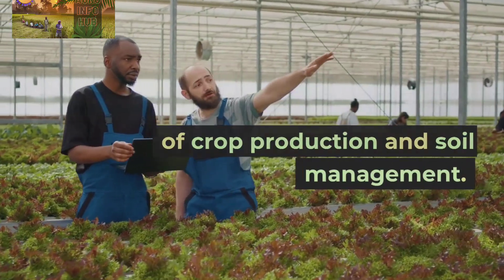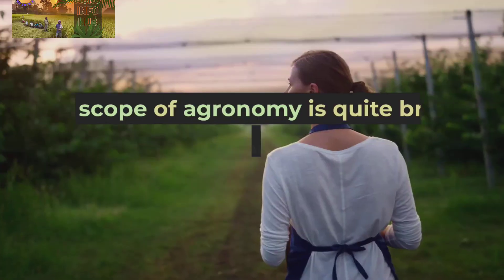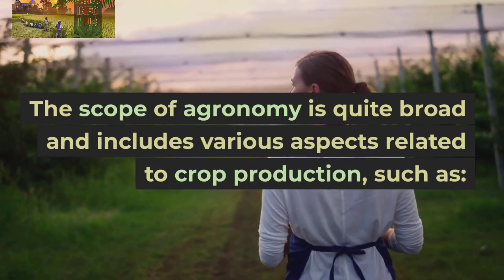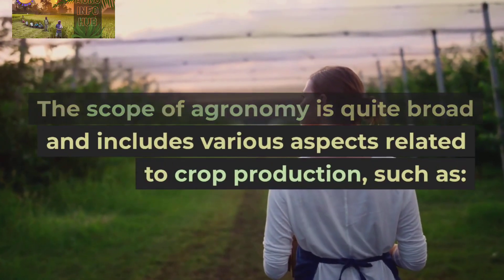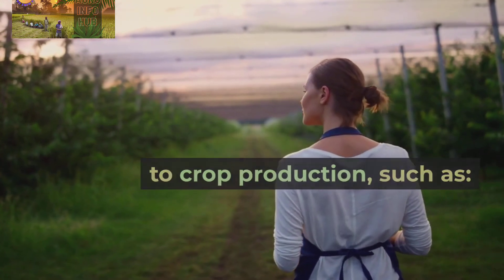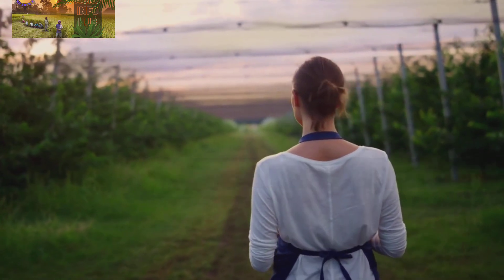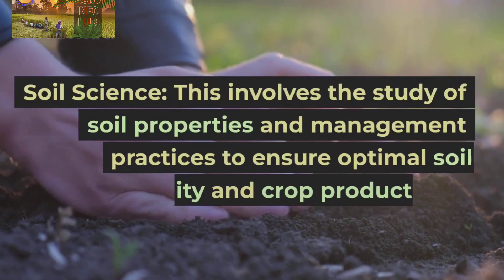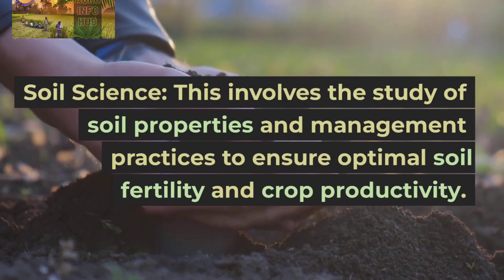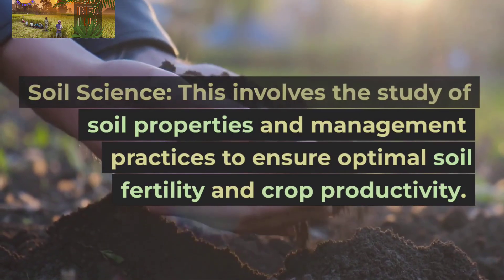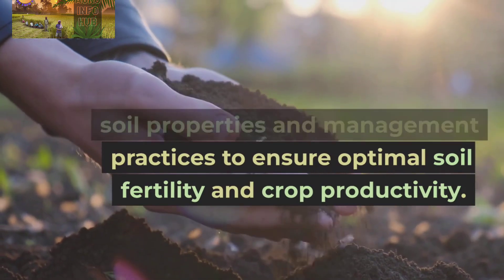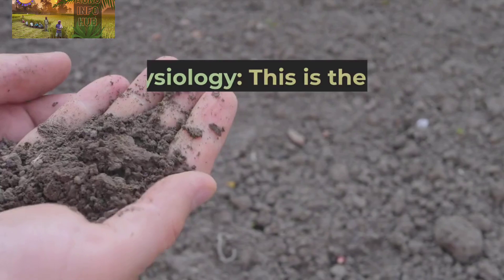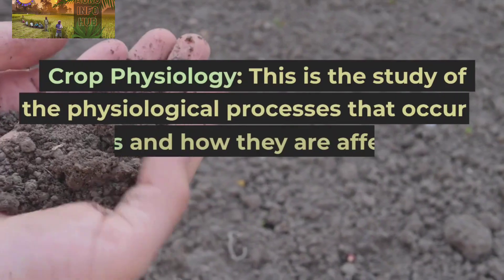The scope of agronomy is the science and practice of crop production and soil management. It is quite broad and includes various aspects related to crop production. Soil science involves the study of soil properties and management practices to ensure optimal soil fertility and crop productivity.